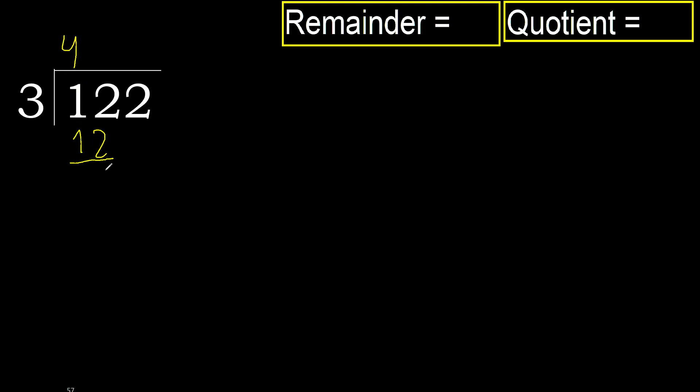12 minus 12 equals 0. Next, eliminate 0 on this side — 2.